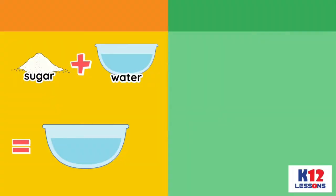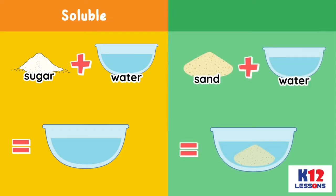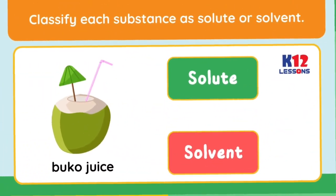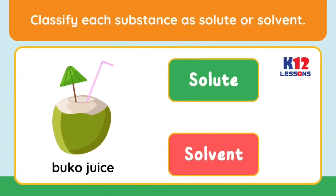There are solutes that can be dissolved in a solvent — this is called soluble. However, there are also substances that cannot be dissolved in a solvent — this is called insoluble.